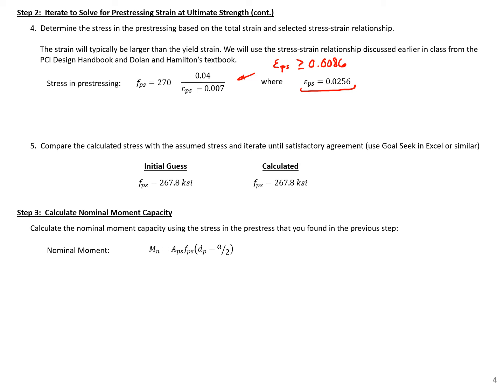we can use the equation shown here and typically will be greater than that yield strain. So plugging in our values here, we can calculate our F sub PS is equal to 270 KSI minus 0.04 divided by our epsilon PS, which we found to be 0.0256 minus 0.007, which will give us an FPS here of 267.8 KSI. We can compare this stress that we found that we calculated to our initial guess and we can see here that they're equal. So we can stop there.